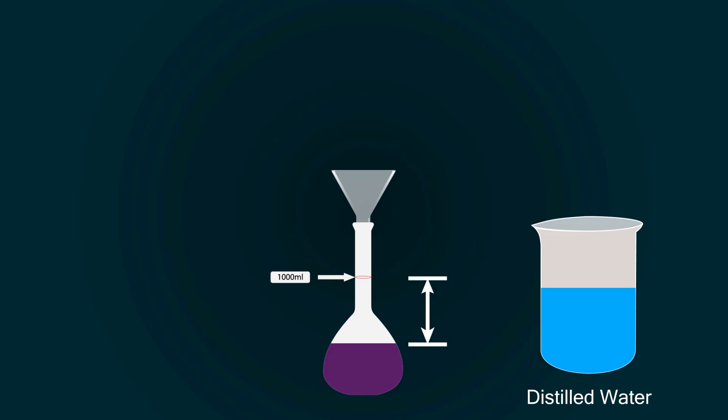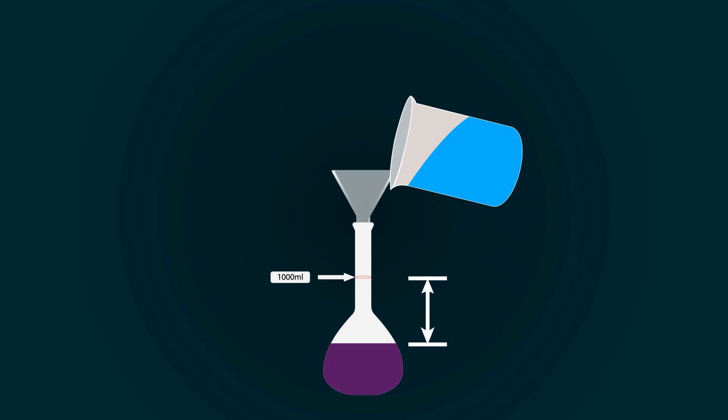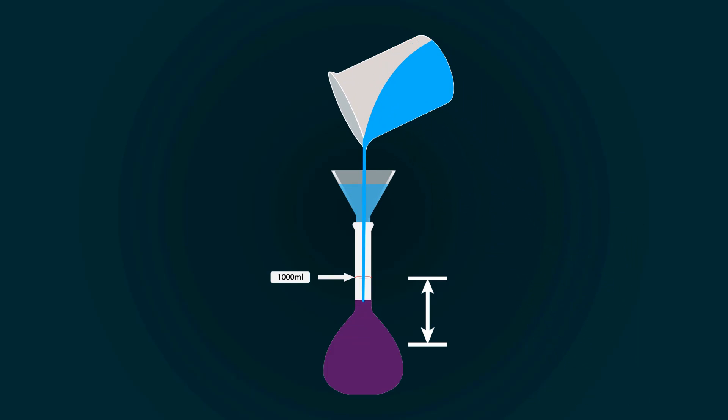So take more distilled water into an empty beaker and start pouring it into the volumetric flask.